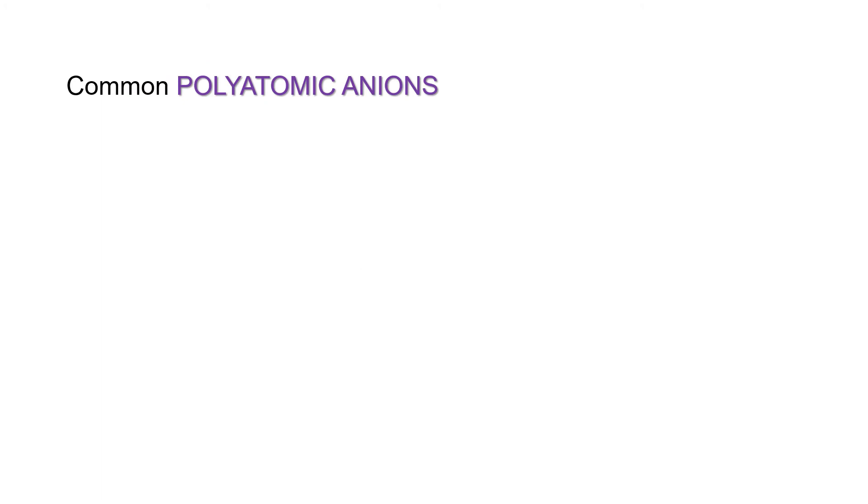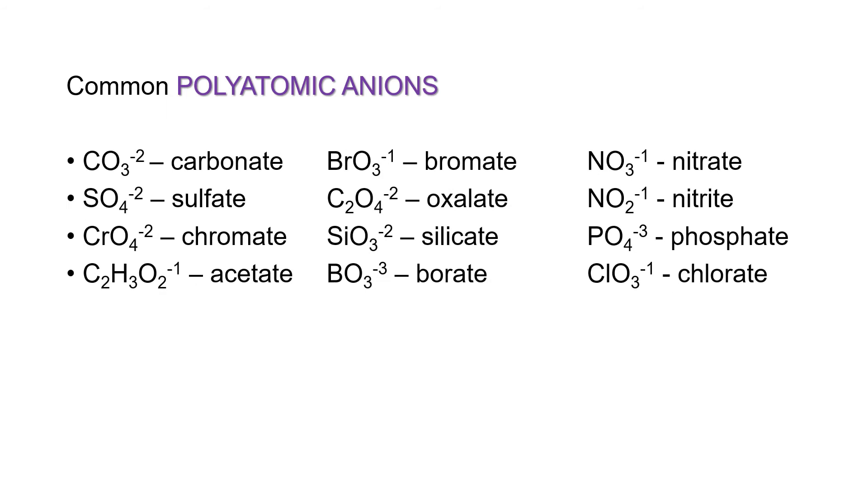These are some common polyatomic anions. We have carbonate, sulfate, chromate, acetate, oxalate, silicate, borate, nitrate, nitrite, phosphate, and chlorate. And there are some more polyatomic anions. They are molecules or compounds with negative net charge.